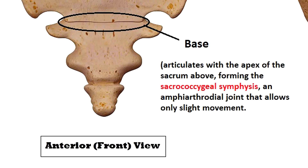Next there is an oval shaped facet at the top called the base, which allows for articulation with the apex of the sacrum above, forming the sacrococcygeal symphysis — an amphiarthrodial joint that allows only slight movement.